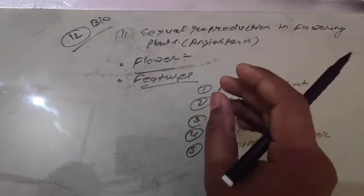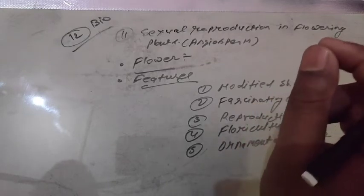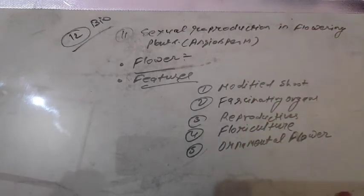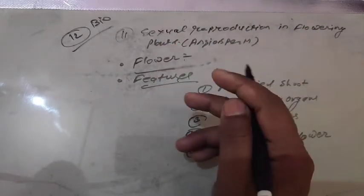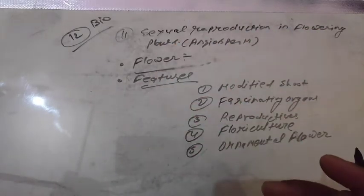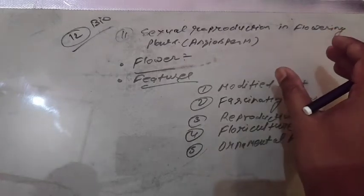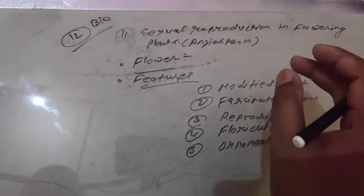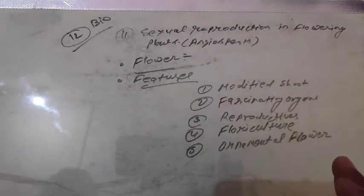Why are angiospermic plants called flowering plants? Because in them the flowers are well mature and consist of all the necessary devices that are helpful for the reproduction process. You should study it carefully and focus on the important concepts regarding this lesson. This is a very important lesson compared to the previous one.